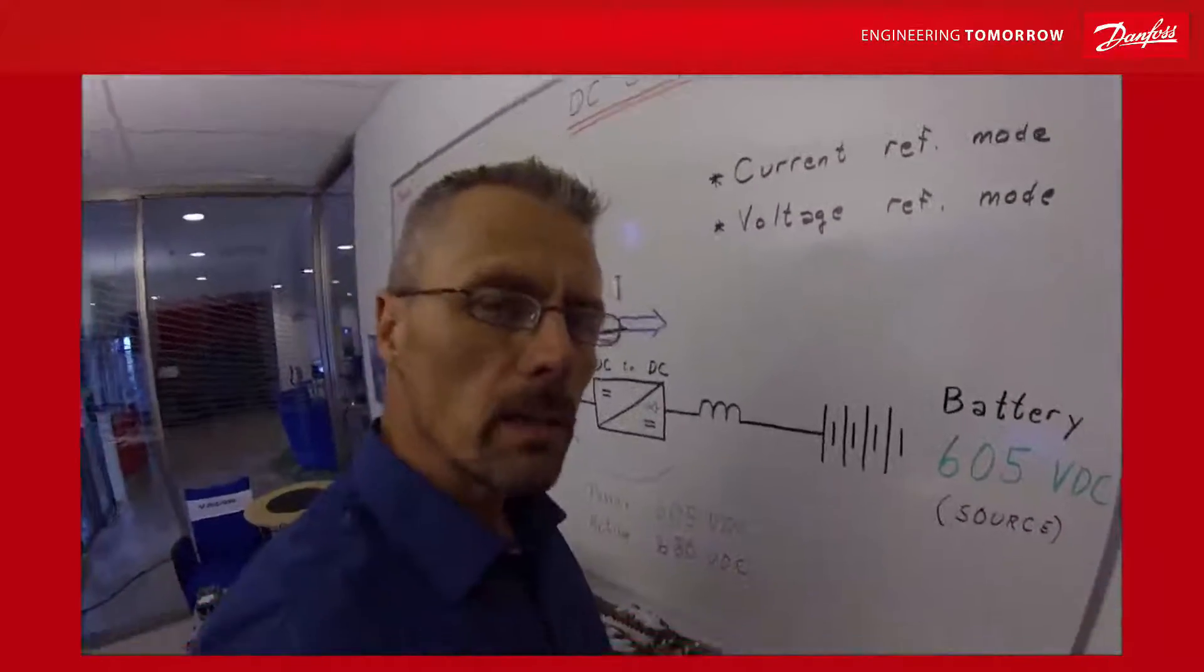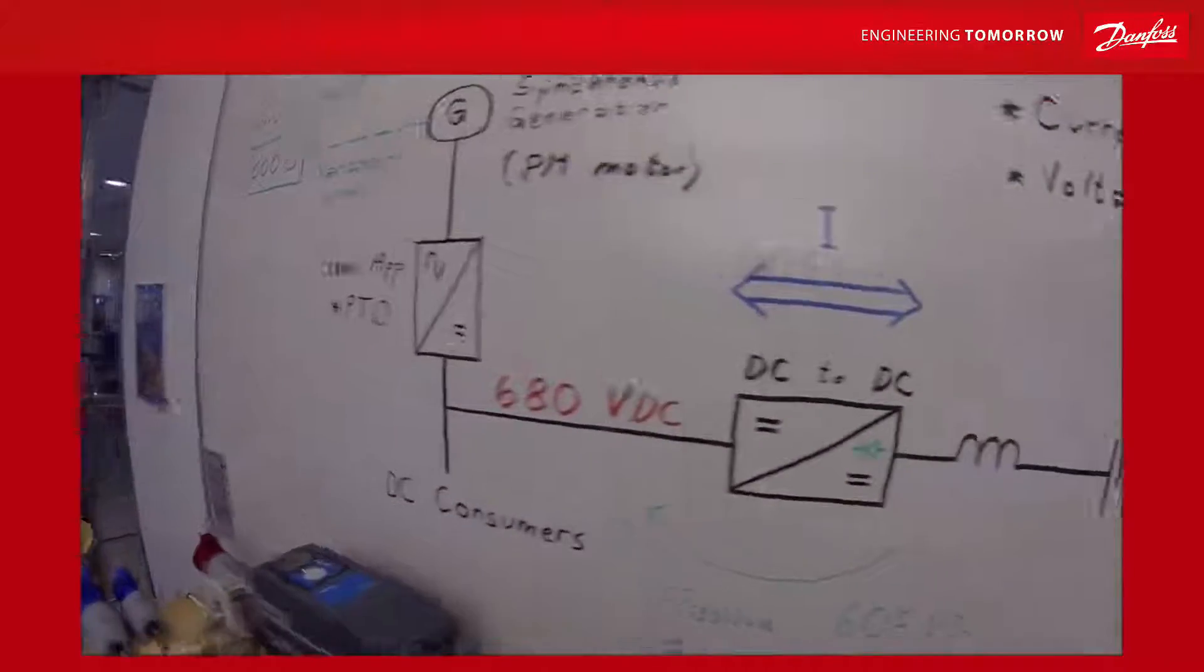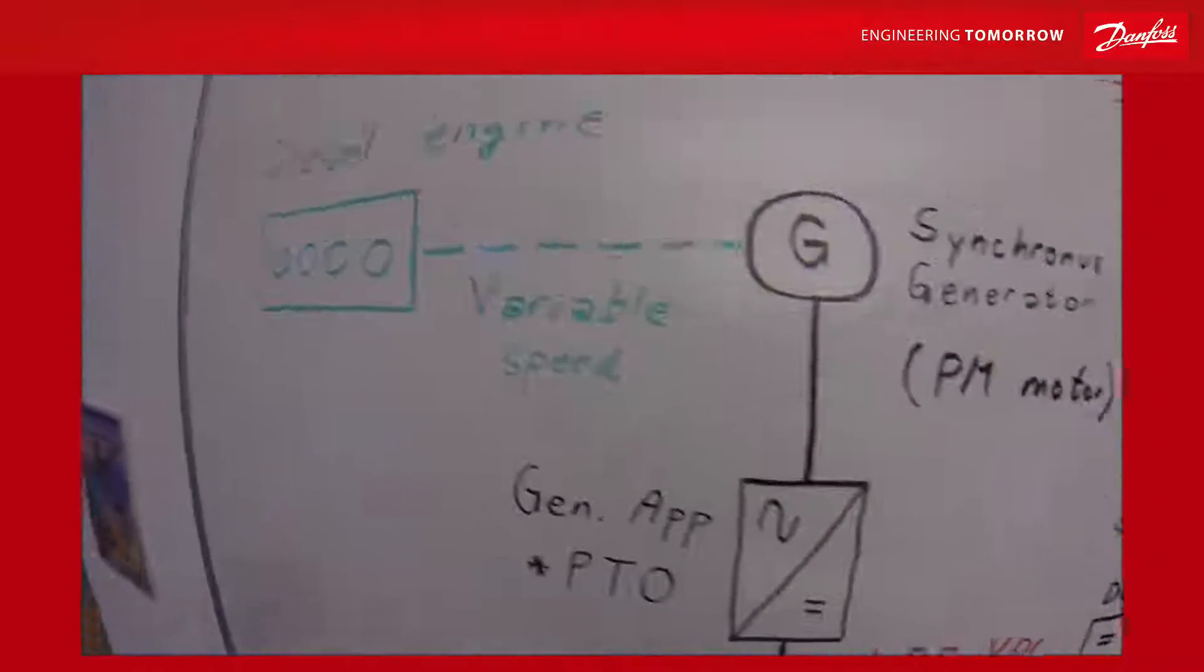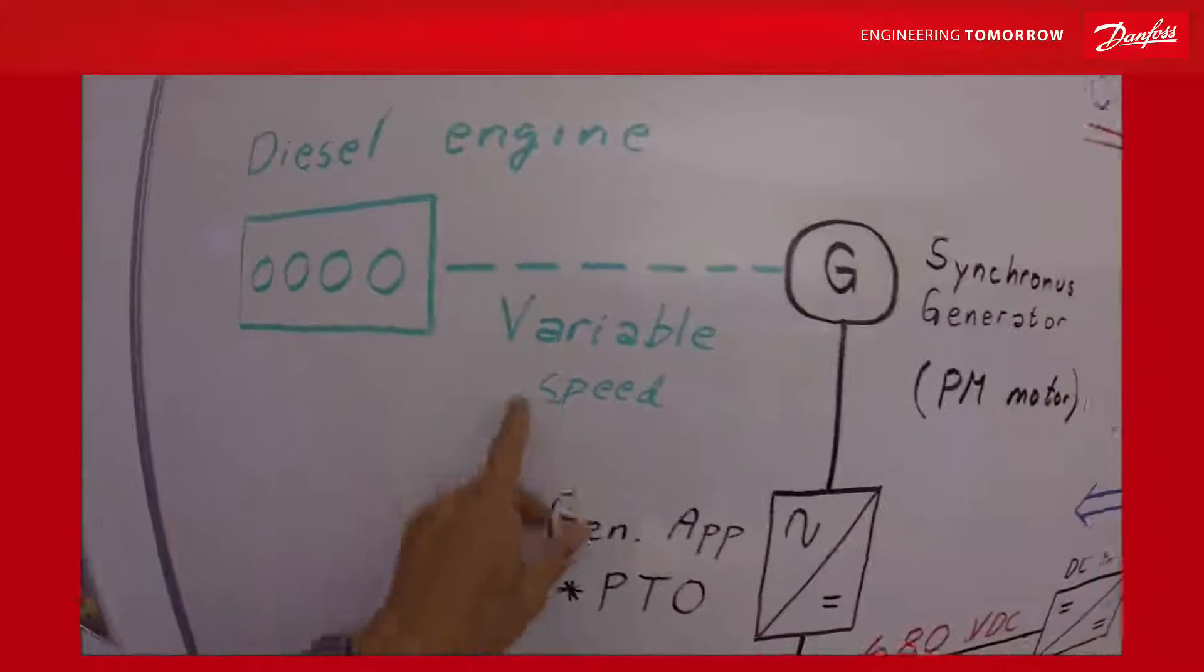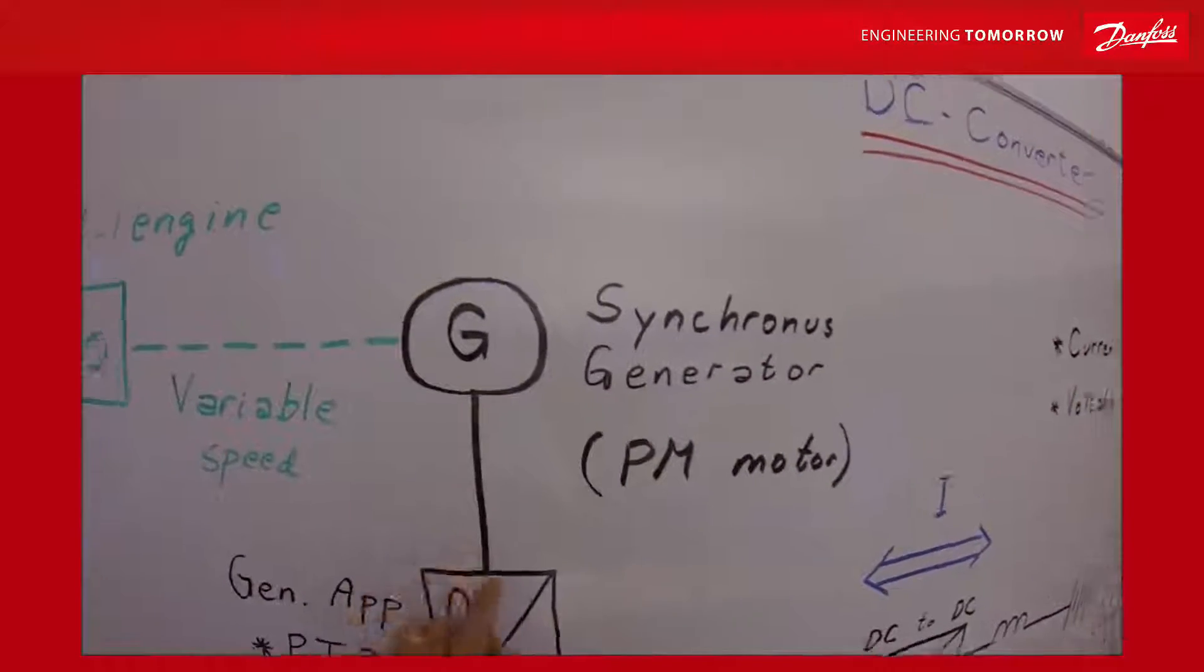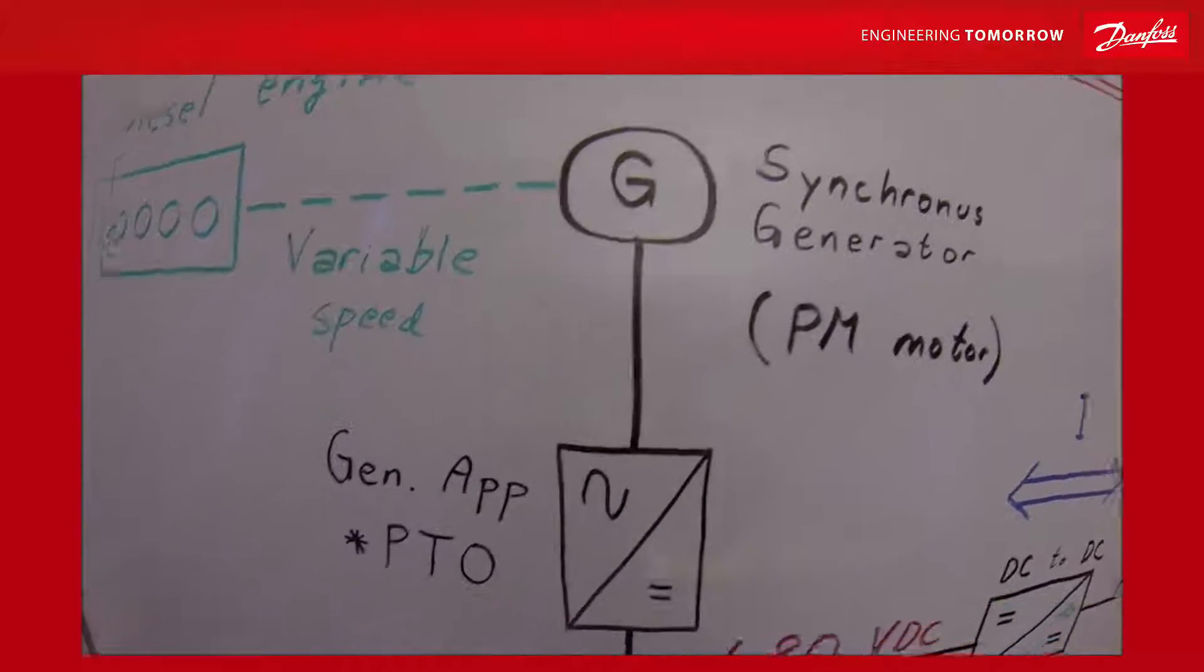One of the places where the DC converter come in handy is when utilizing it on diesel generators. Diesel generators with variable speed, synchronous generator. In this case a permanent magnet motor.